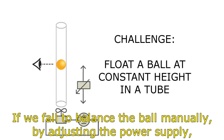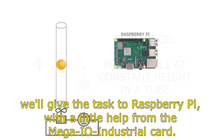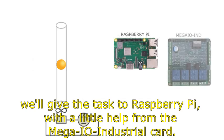If we fail to balance the ball manually by adjusting the power supply, we'll give the task to Raspberry Pi with a little help from the Mega I.O. industrial card.